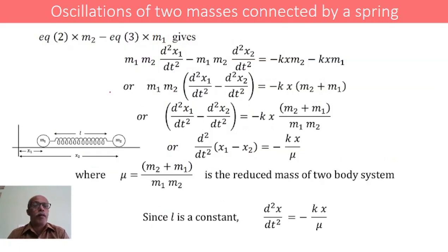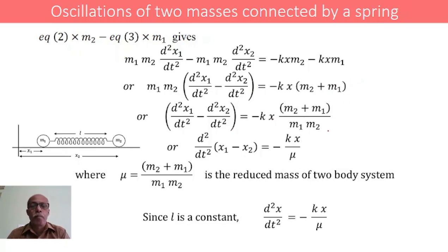Now, multiplying equation 2 by m2 and equation 3 by m1, and subtracting, we get: m1 m2 times d squared x1 by dt squared minus d squared x2 by dt squared equals minus kx times m1 plus m2. Therefore, d squared x1 by dt squared minus d squared x2 by dt squared equals minus kx times (m1 plus m2) by (m1 m2). This gives d squared by dt squared of (x1 minus x2) equals minus kx by mu, where mu is the reduced mass defined as m1 m2 divided by m1 plus m2.